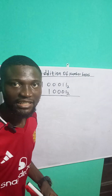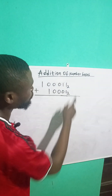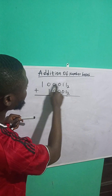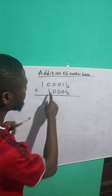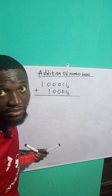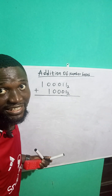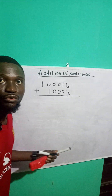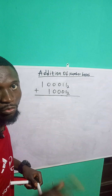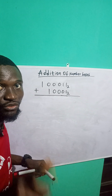Once you add these two numbers that are in base 2, remember this is base 2. You cannot see a number that is 2 or bigger than 2 here, because this is base 2. So all the numbers here are numbers that are less than 2. Since you are adding them in base 2, all your results must be numbers that are less than 2.